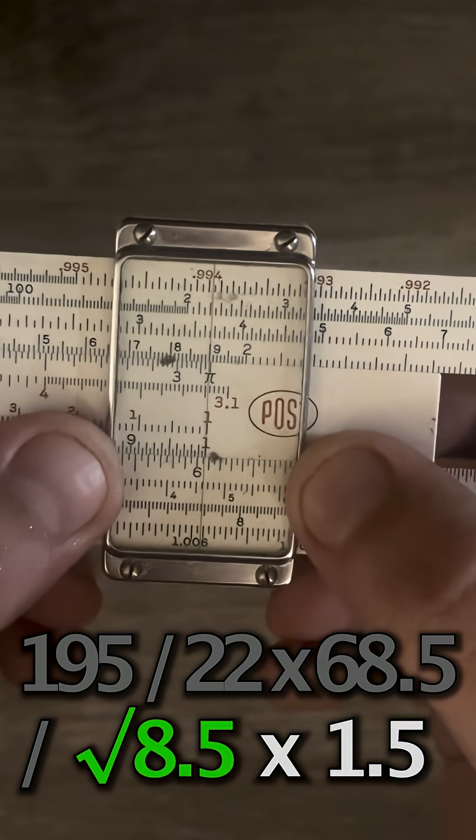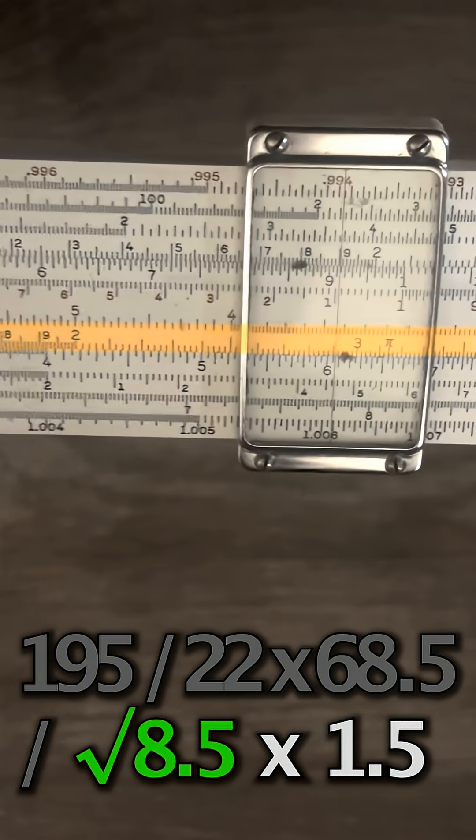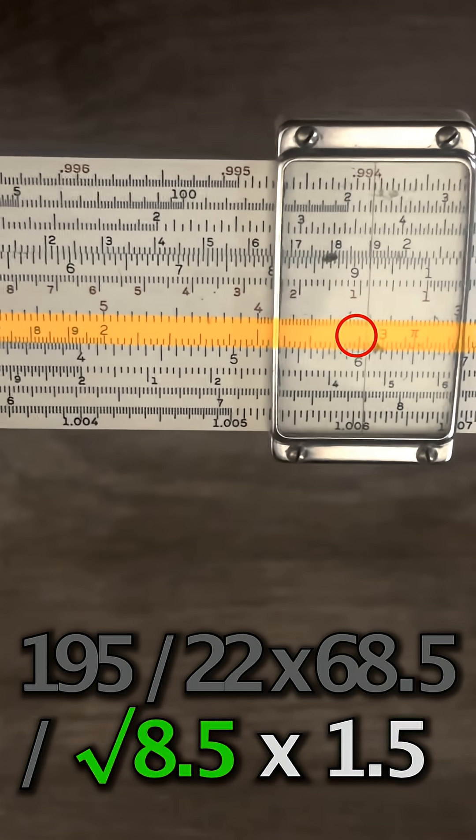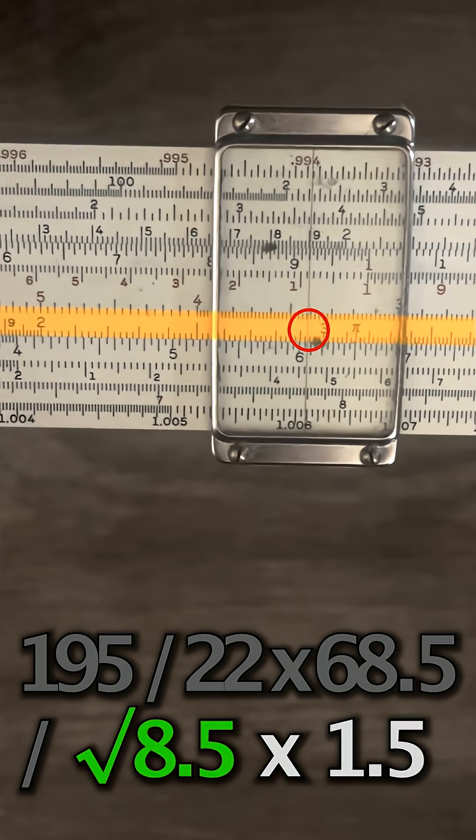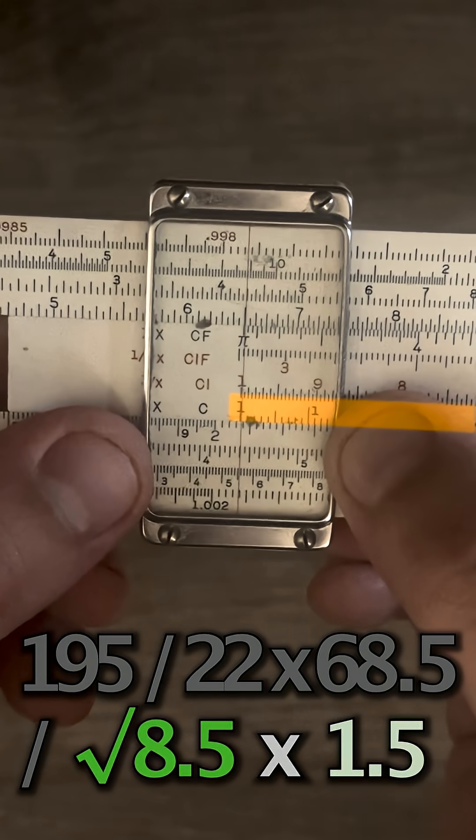So I'll go back to the right index and we're going to divide. So divide by 2.915 right there. We'll go to the left index to get our answer right there.